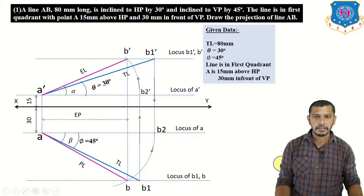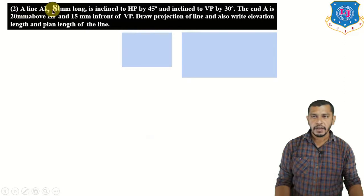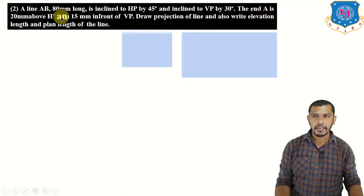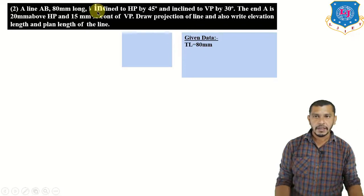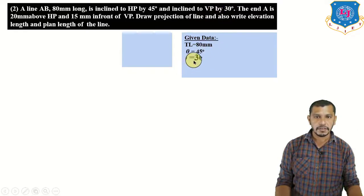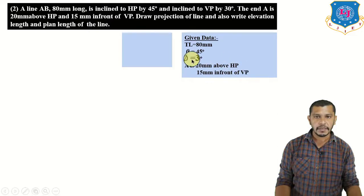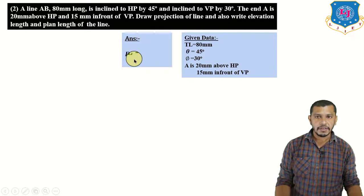Next example: a line AB 80 mm long is inclined to HP by 45 degrees and inclined to VP by 30 degrees. End A is 20 mm above HP and 15 mm in front of VP. Draw the projection of the line and also state the elevation length and plan length. So theta is 45 degrees, phi is 30 degrees, and point A is in the first quadrant.